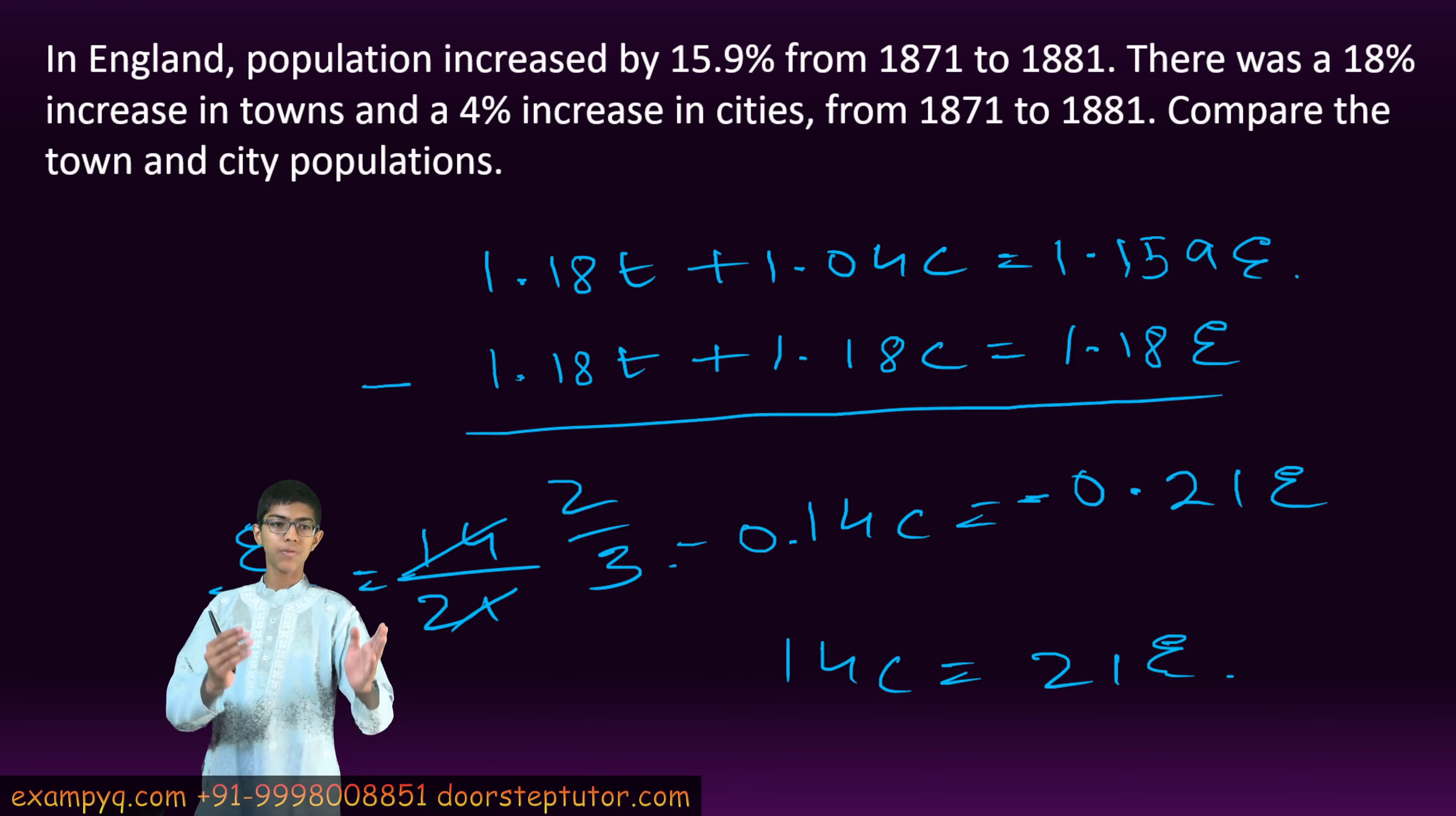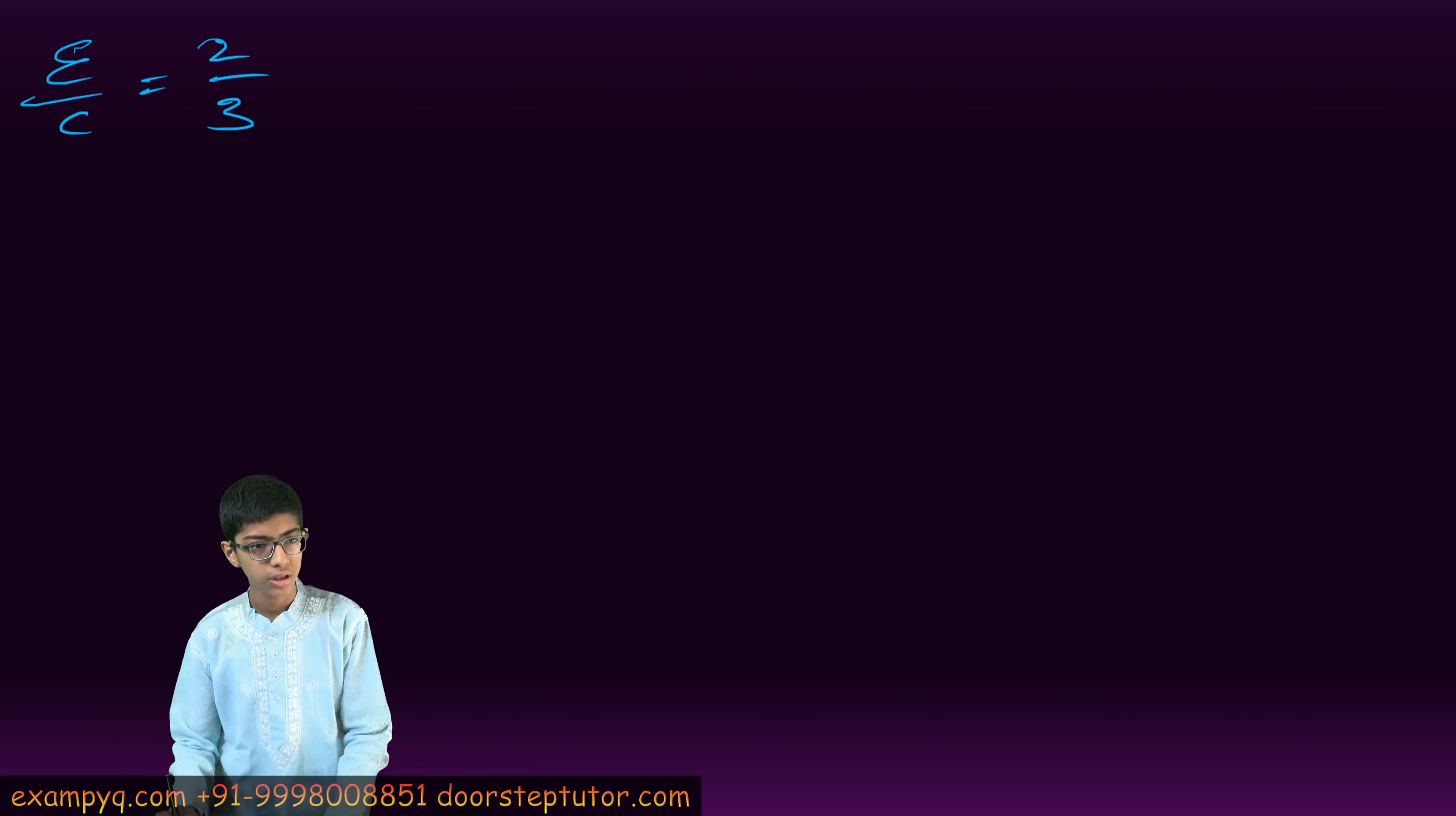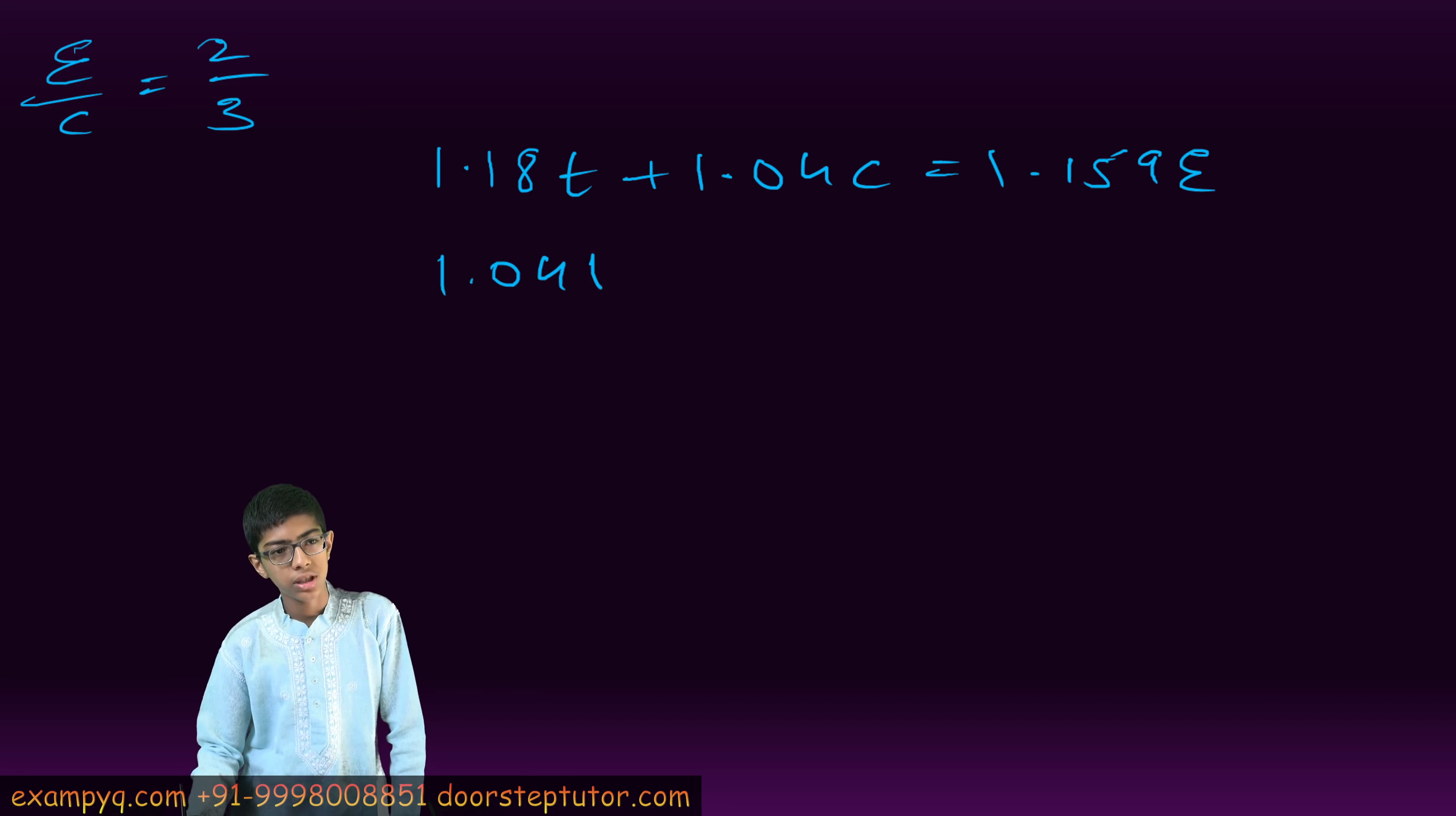Now, similarly, as we multiplied the equation by 1.18, we will do the same by multiplying the equation by 1.04. So we have 1.18T plus 1.04C equals 1.159E. Second equation will be 1.04T plus 1.04C equals 1.04E.